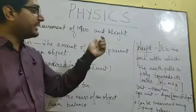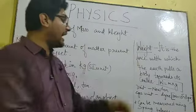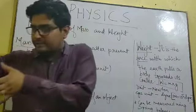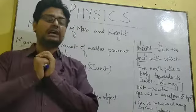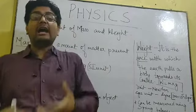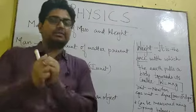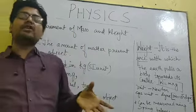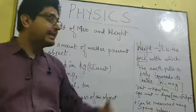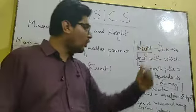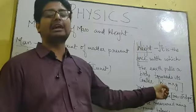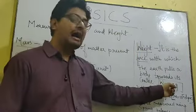Now, what is weight? Weight is actually a force — it is the force with which the earth pulls a body towards its centre. If an object is on the surface of the earth, the gravity of the earth attracts it. Gravity multiplied by the mass of the object gives weight. So weight is a product of mass and gravity, and the formula is: weight = mass × gravity.